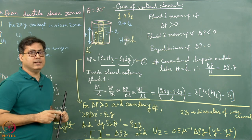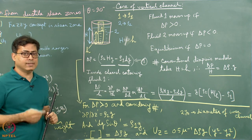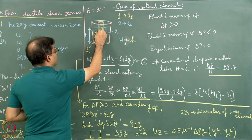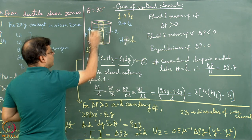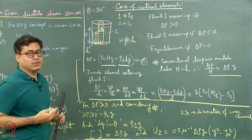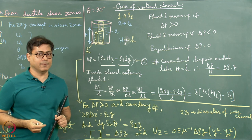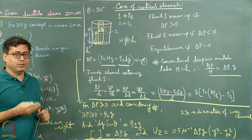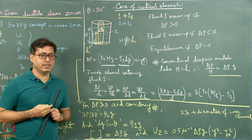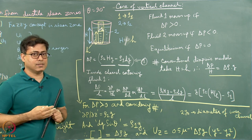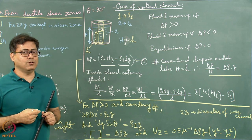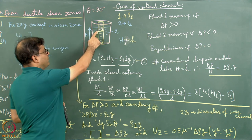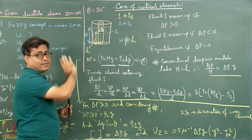If fluid 1 is a Newtonian viscous fluid, it will attain a parabolic velocity profile and also a parabolic displacement profile. In the case of parabolic profiles, I have already demonstrated and discussed how to find out the expected strain variation from one side to the other.